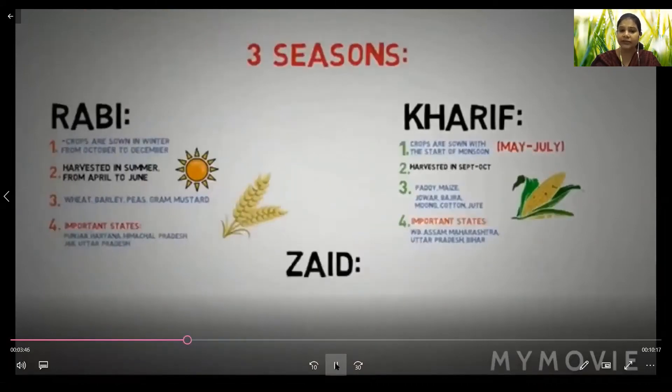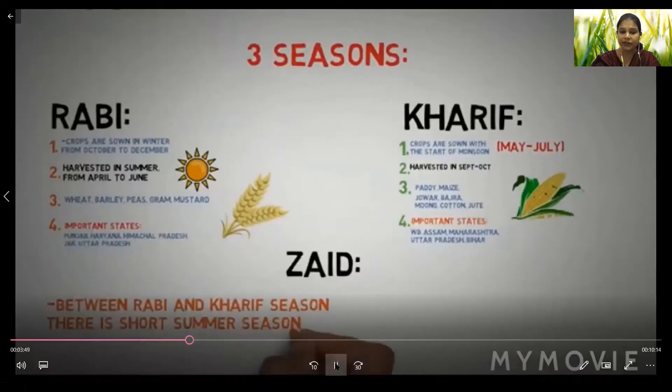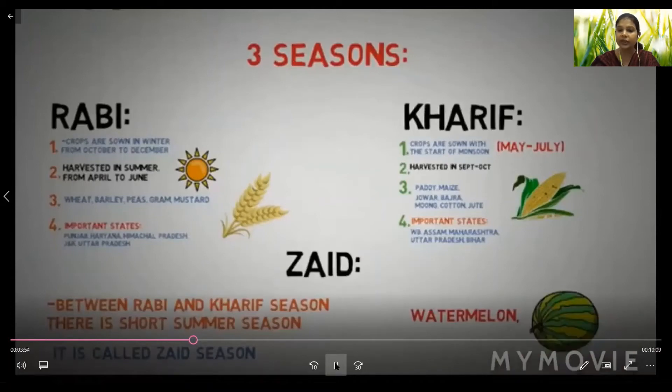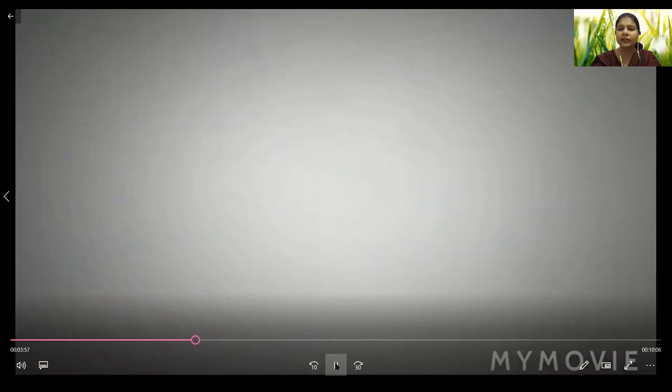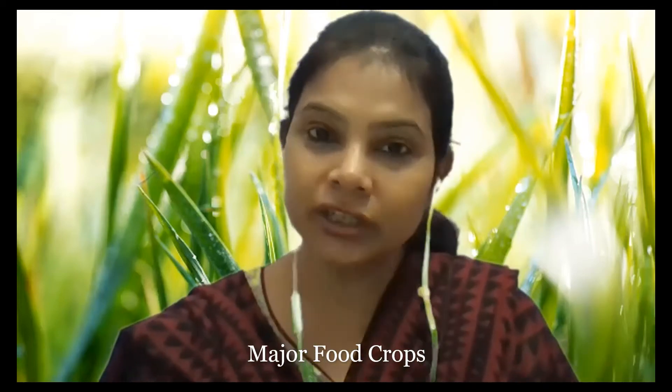The last season is Zaid. Between Rabi and Kharif there is a short summer season called the Zaid season. Watermelon, muskmelon, and cucumber are examples of Zaid crops. With that, the introduction and farming types are complete — now let us begin with the major crops of India.